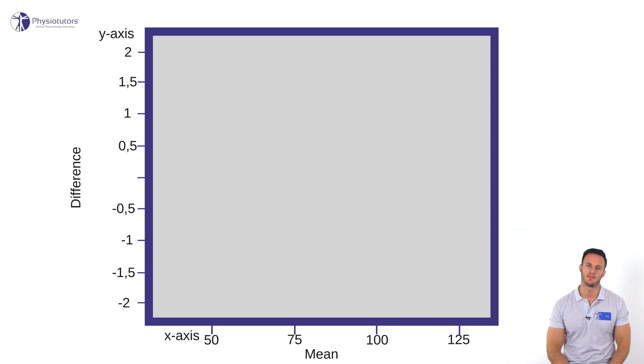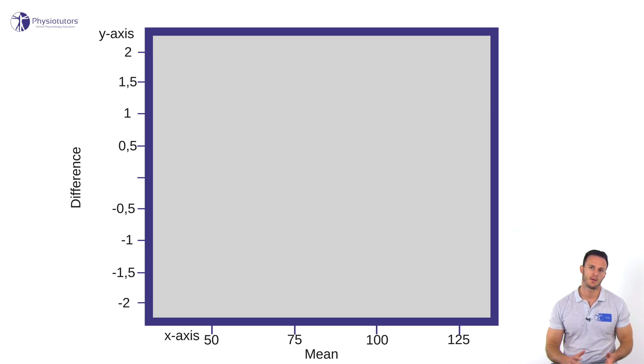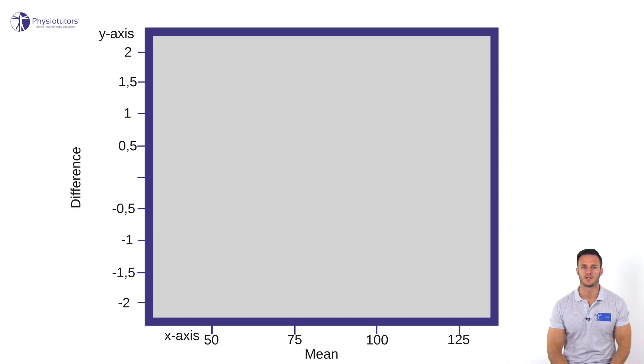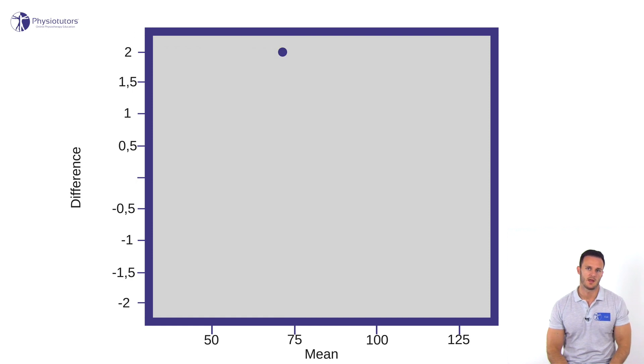The easiest way to calculate the measurement error is to calculate the limits of agreement. To do that, we draw a so-called Bland-Altman plot with repeated measurements. The average of two measurements is depicted on the x-axis and the difference between the two measurements on the y-axis. So if one person weighs 70 kilos on the first measurement and 72 kilos on the second measurement, we place the mark at 71 kilograms on the x-axis and 2 on the y-axis. Doing this for a lot of measurements of a stable group of persons gives us a scatter plot.